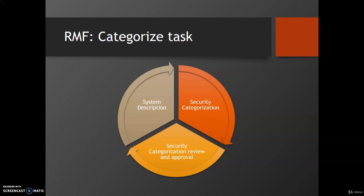The categorization can be done either by a single level impact for a system based on the high water mark concept, or using three level impact values that may vary for each of the security objectives — confidentiality, integrity, and availability. The security categorization process is carried out by system owners and information owners in cooperation and collaboration with senior leadership and those with mission, business function, or risk management responsibilities.